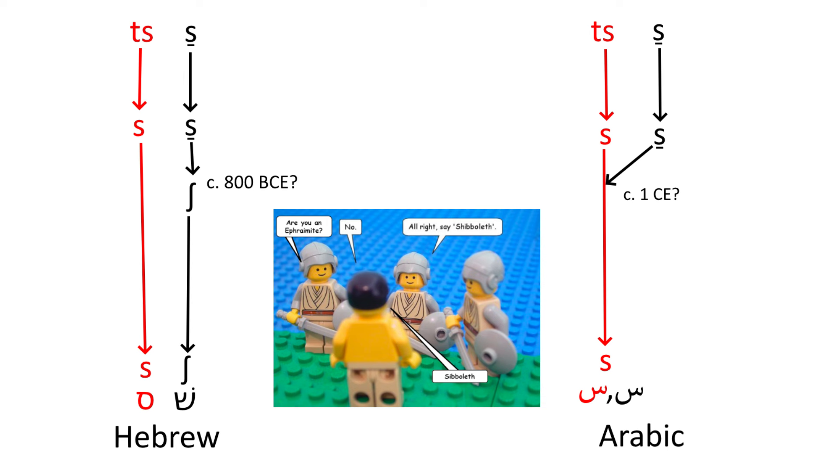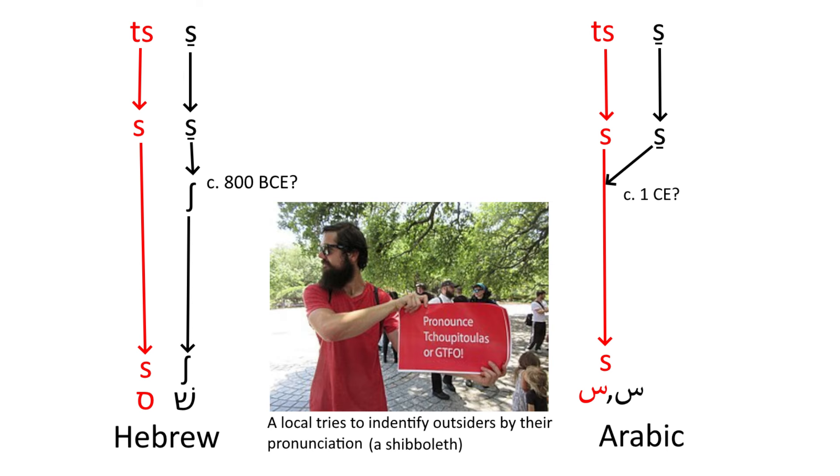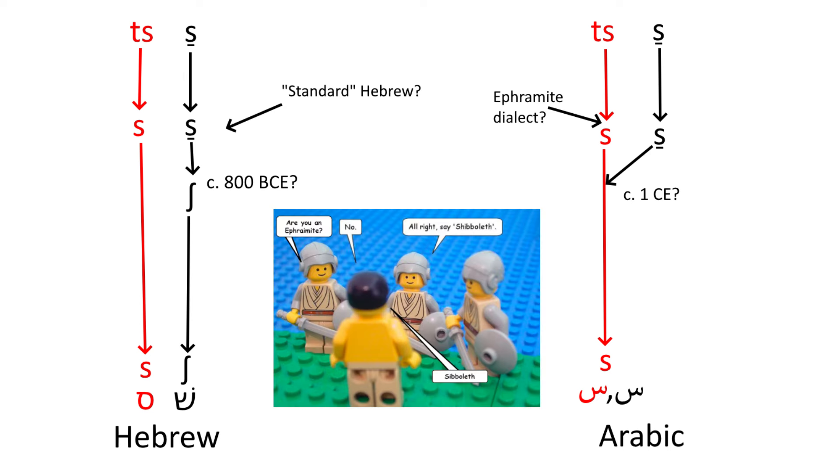Today, a Shibboleth is still the term referred to when you can identify someone based on pronunciation. What may have happened is that the Ephraimite dialect, like Arabic,